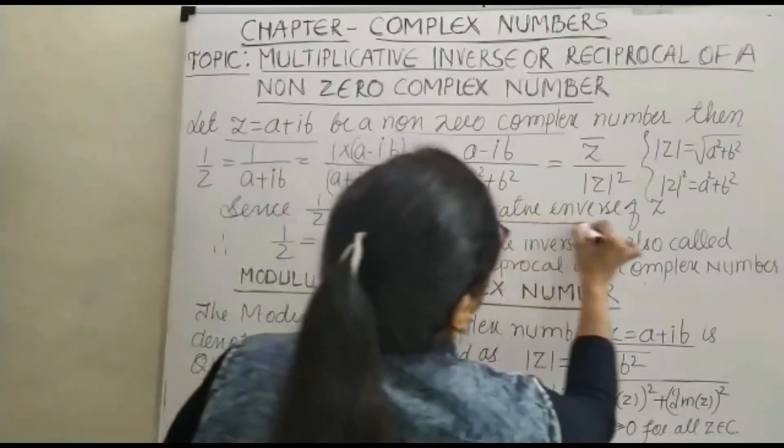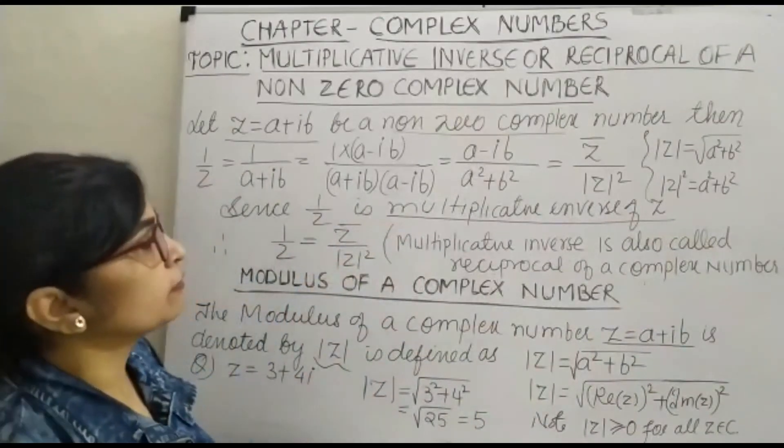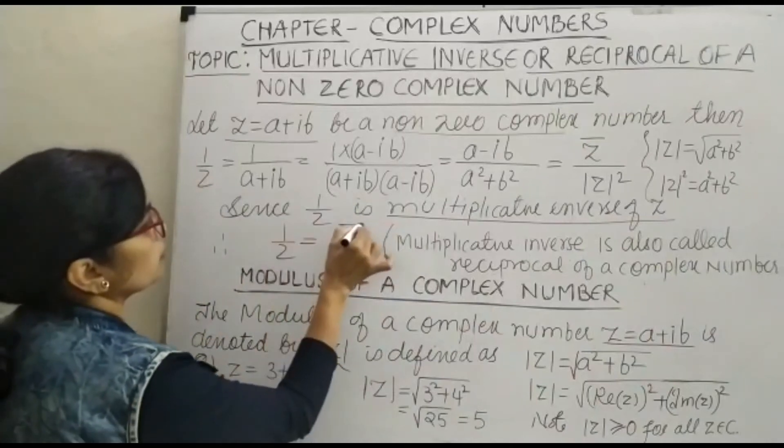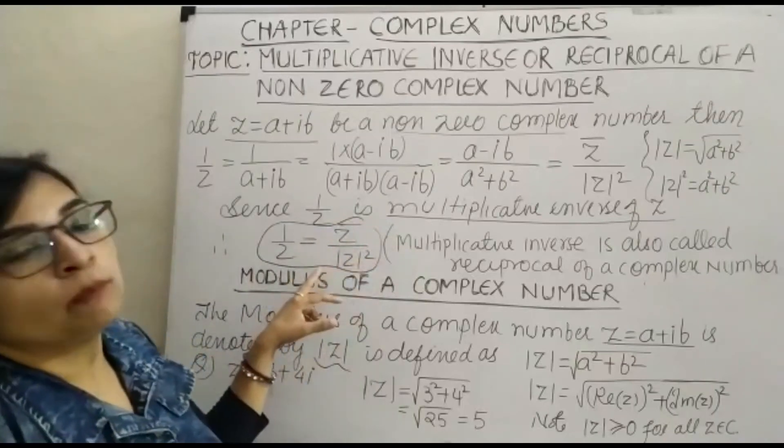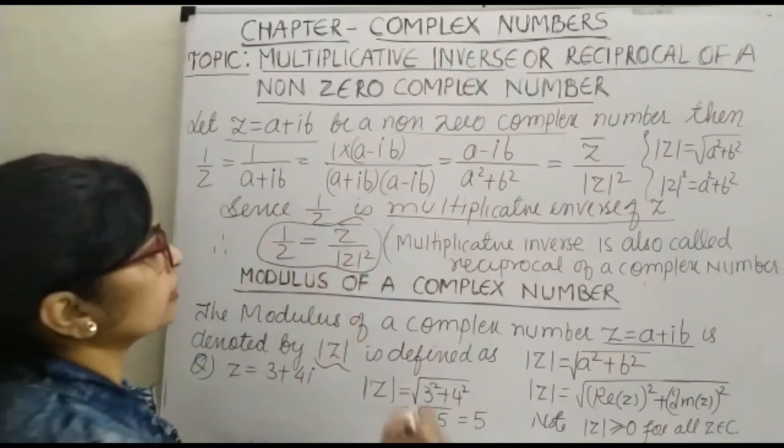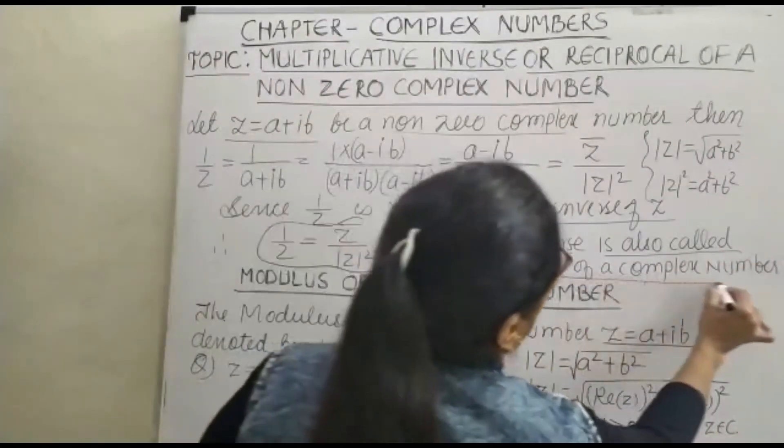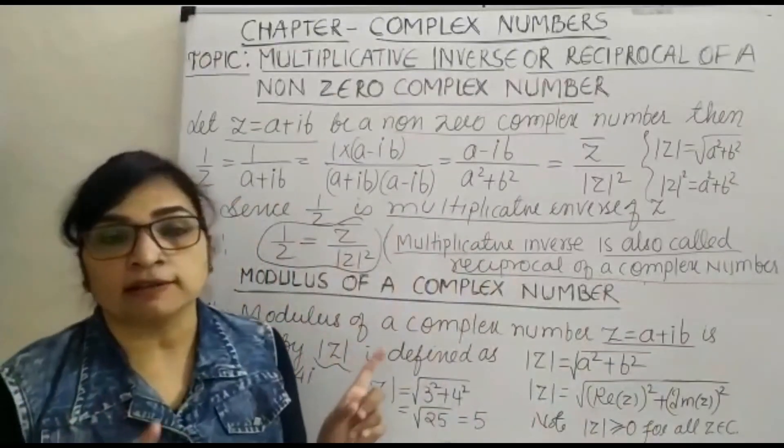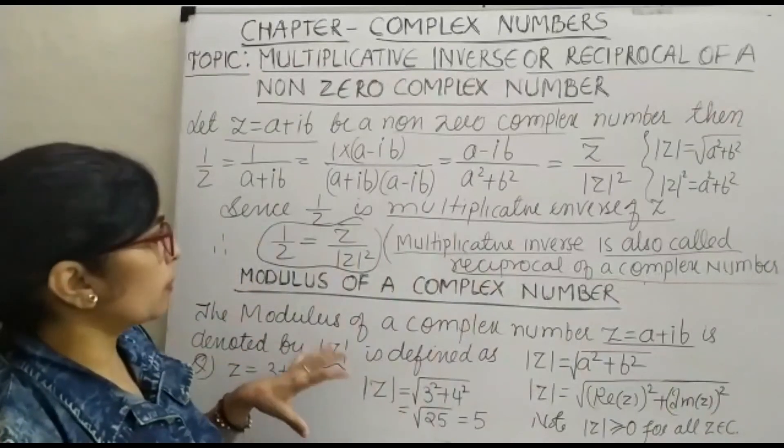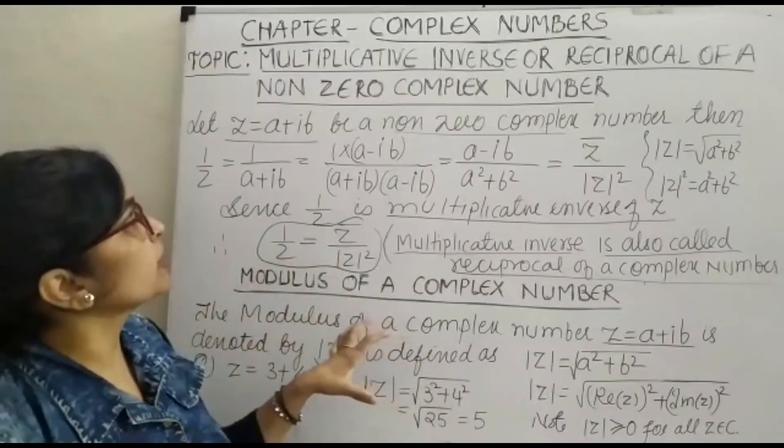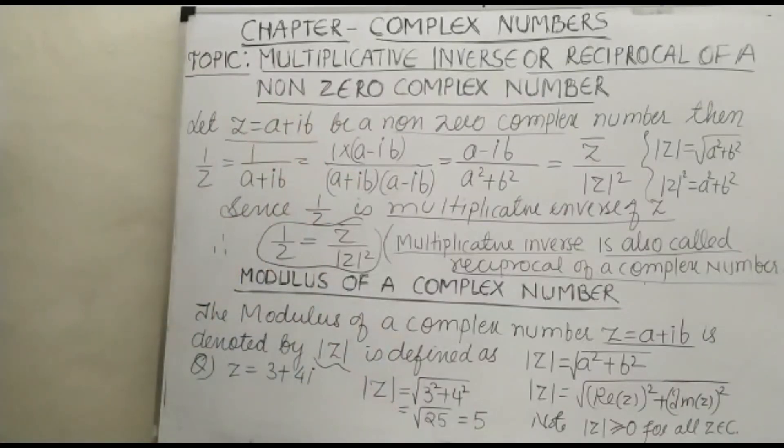Since 1 upon z is the multiplicative inverse of z, we get 1 upon z equals conjugate of z upon modulus of z the whole squared. This is the multiplicative inverse of z, also called the reciprocal of a given non-zero complex number. This is all about the modulus of a complex number and multiplicative inverse of the complex number. Thank you.